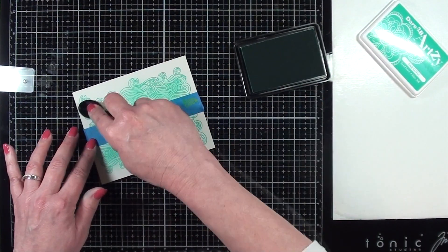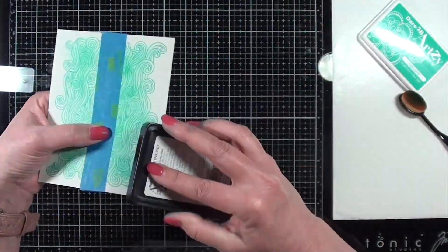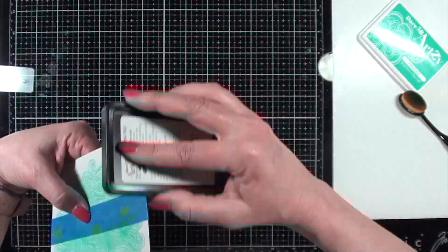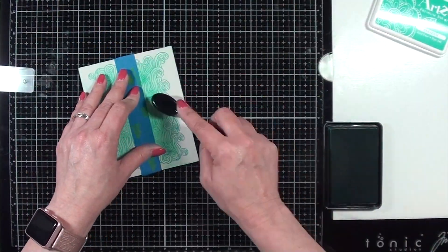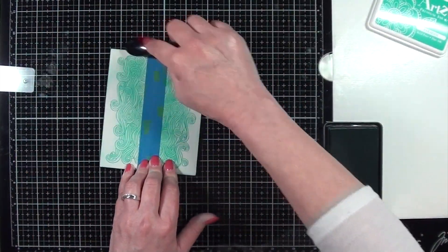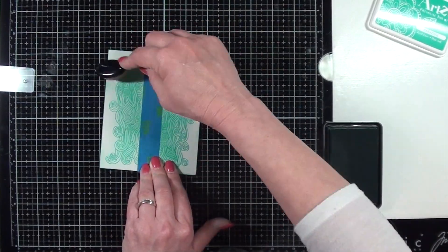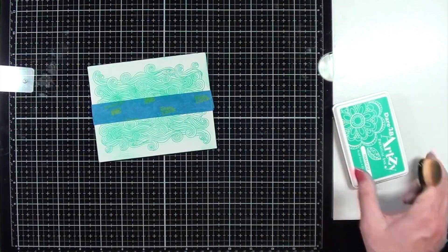And now that I'm finished up with this step, I'm going to add some ink around the edges of my card panel just so that there's a little bit of contrast around the edges. And then I decided to go back in with a brush and blend in a little more color from the edges towards the waves.